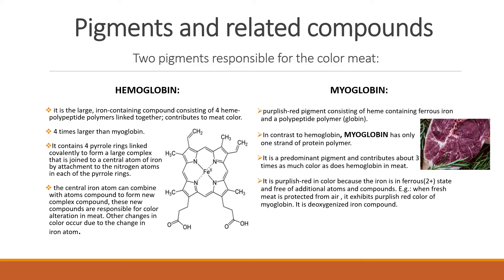Hemoglobin is one of the main constituents of the blood, while myoglobin is a purplish-red pigment consisting of heme containing ferrous iron and a polypeptide polymer which is globin. In contrast to hemoglobin, myoglobin has only one strand of protein polymer. It is the predominant pigment and contributes about three times as much color as does hemoglobin in meat.